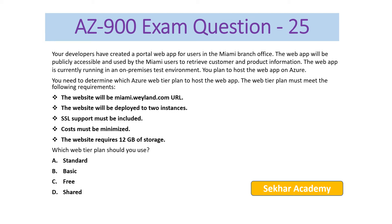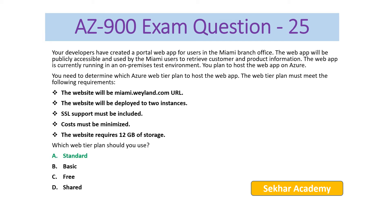The options are: A) Standard, B) Basic, C) Free, and D) Shared. Basic, Free, and Shared will not have the capability to provide SSL support. The Standard plan supports all the listed requirements. So the right answer is A, Standard.